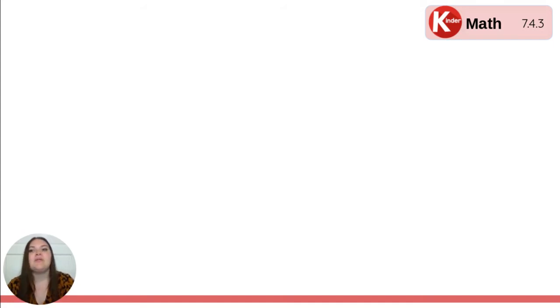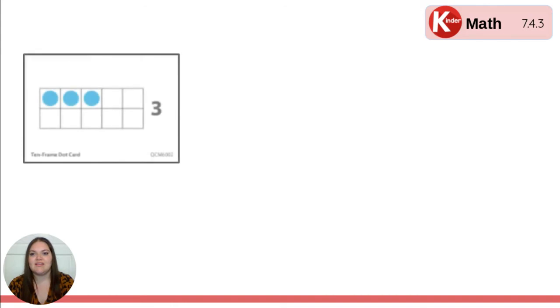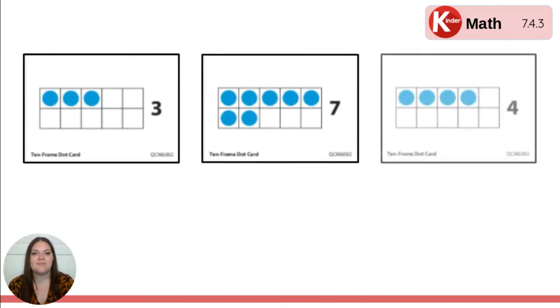All right, now let's look at some plain 10 frame cards. I'm going to put three of them on the screen. Our goal is to take a look at their numbers and figure out a strategy of how we can add them together quickly. Ready? Here's our three cards. Let's say the numbers names. I see three, seven, and four. Okay.